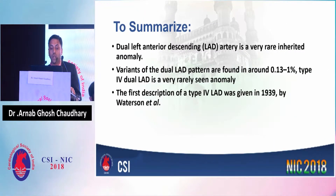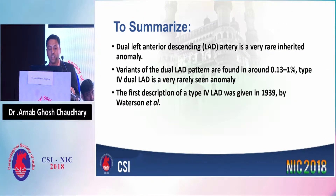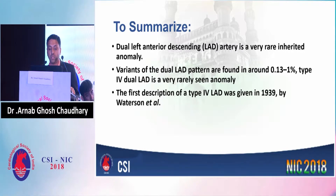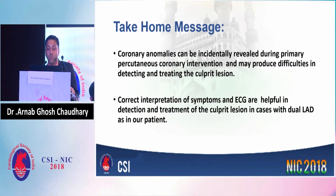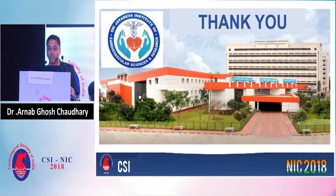To summarize: dual left anterior descending artery is a very rare congenital anomaly, and variants of dual LAD pattern are found in around 0.13 to 1%. Type 4 dual LAD is a very rare anomaly, with its first description given in 1939 by Waderson et al. The take-home message: coronary anomalies can be incidentally revealed during primary PCI and may produce difficulties in detecting and treating the culprit lesion. Correct interpretation of symptoms and ECG are helpful in detection and treatment of the culprit lesion in cases with dual LAD. Thank you.